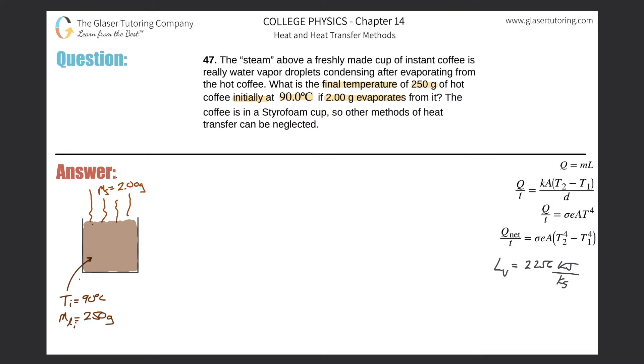Here's the coffee. The initial temperature is 90 degrees Celsius and the initial mass is 250 grams. Eventually, a mass of two grams will evaporate, and we can assume this is basically water. Heat is going to be transferred from the liquid coffee into the steam particles, so the coffee should be losing heat over time, and that heat is then going to evaporate the water.